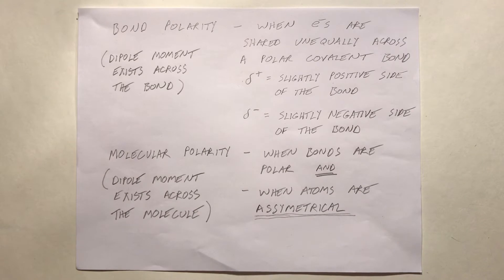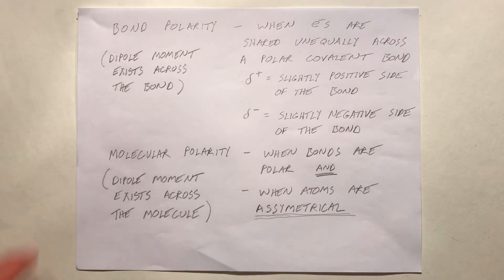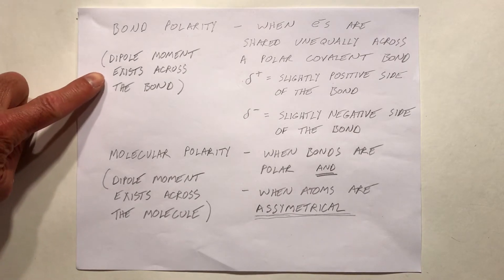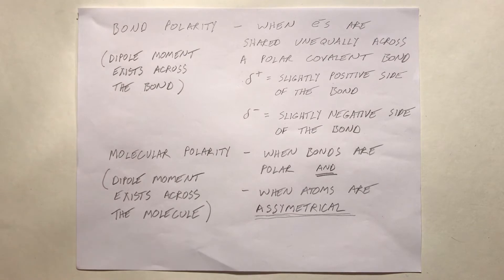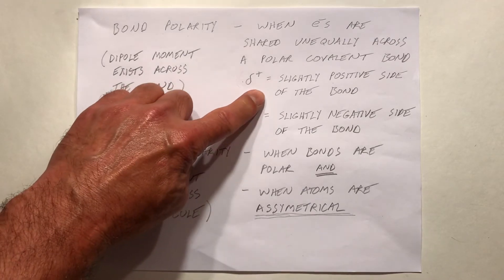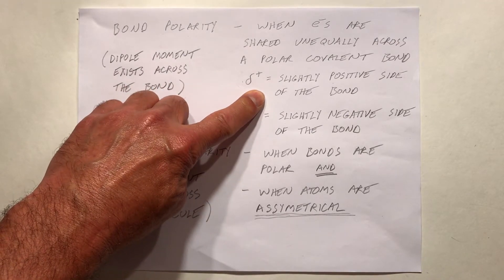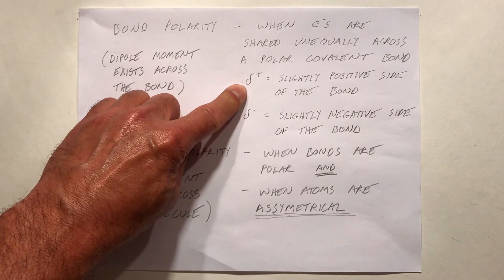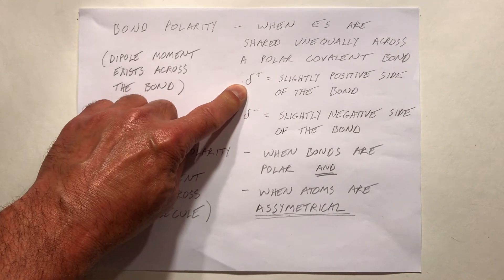Bond polarity is when electrons are shared unequally across a polar covalent bond. When that happens, we would say there is a dipole moment that exists across the bond. That means there would be a slightly positive side of the bond, indicated with a delta plus, or a positive dipole.